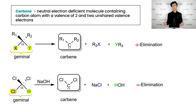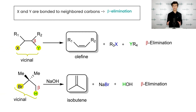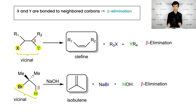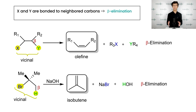The typical product of such a reaction is carbene, a neutral electron-deficient molecule containing a carbon atom with a valence of two and two unshared valence electrons. Now let us consider another case, namely when X and Y are bonded to neighboring carbons. The elimination is designated then as beta elimination. There is a special name for two substituents which are bonded to neighboring atoms — chemists call them vicinal.